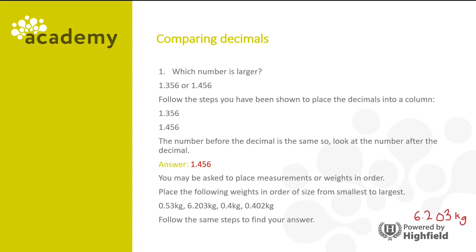So that will go first. Now let's look at the second digit and we have a 5, we have a 2, we have a 4 and we have a 4. So the 5 being the largest digit, 0.53 kilograms is the second largest number. Now we have two numbers where the first digit after the decimal point is the same. 0.402 is the only one with anything after the 4, so that is the next largest number. And finally 0.4 kilograms is the smallest.